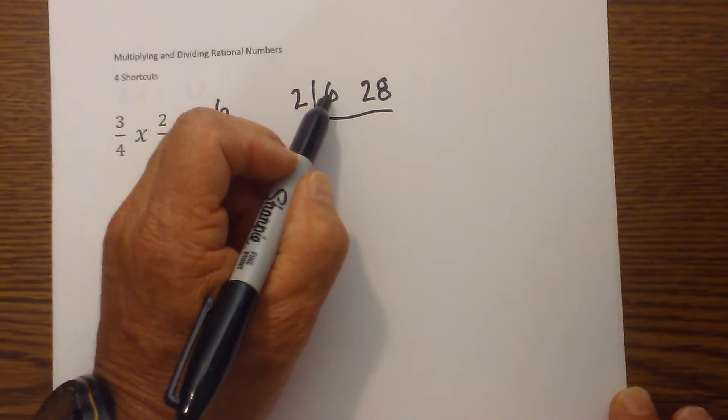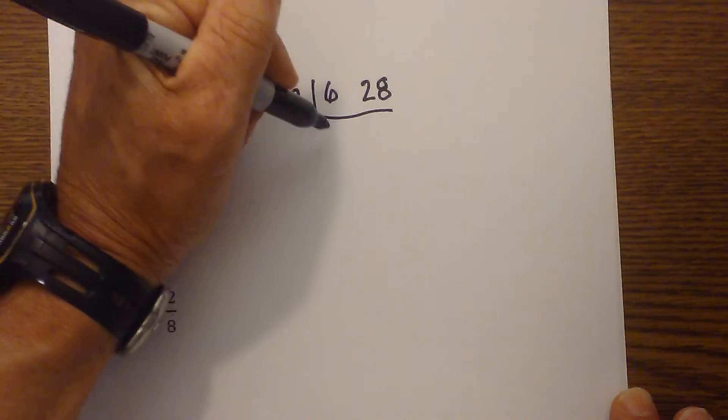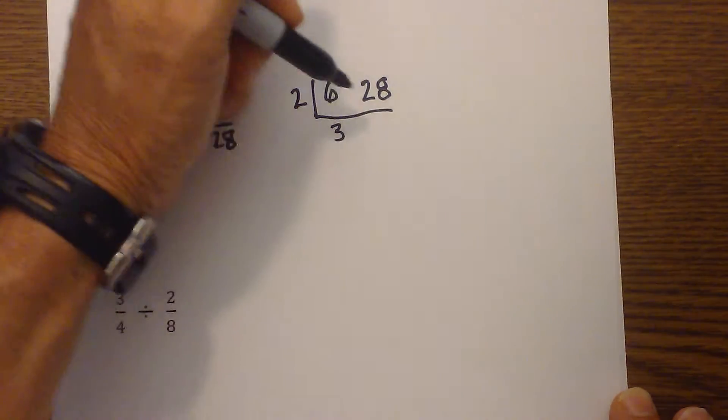And I know that 2 goes into both of them because they are even numbers. So 2 goes into 6 three times, 2 goes into 28 fourteen times.